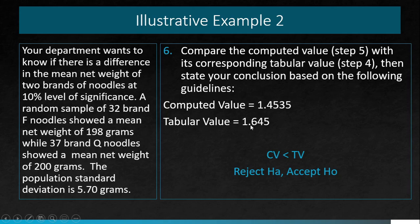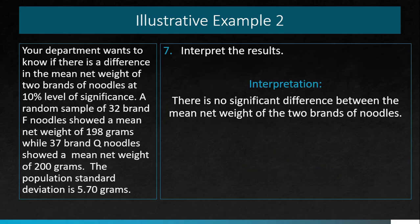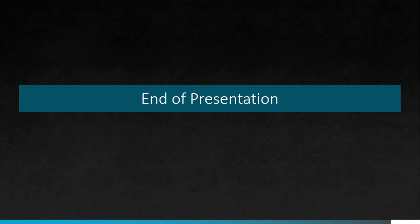Step 6: The computed value of 1.4535 is lower than the tabular value of 1.645, therefore we accept the null hypothesis. The interpretation is that there is no significant difference between the net weight of Brand F and Brand Q noodles. Statistically, they are essentially the same. That concludes the third part of this six-part series on hypothesis testing.